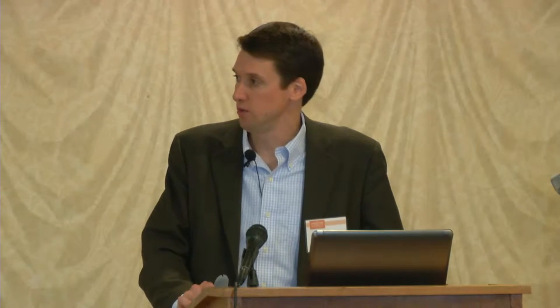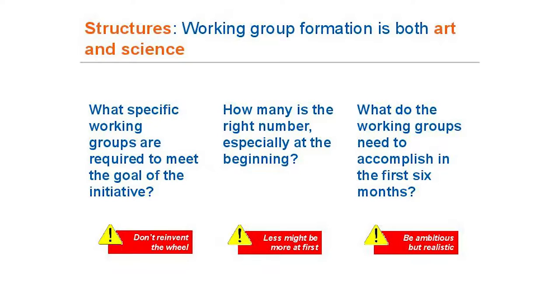How many working groups is the right number? It depends on your stock of leaders — do you have enough good champions? What can the backbone realistically manage? One backbone person probably can't manage five or six working groups. Sometimes starting with less is more. In the first six months, use data to move things forward — have an evidence base about what works nationally and locally to guide decision making. You might do a subsystem map for each working group, and critically, build relationships and trust in those first six months.